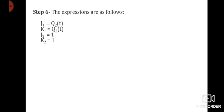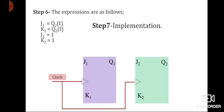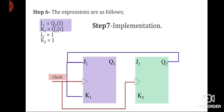Now moving toward implementation. We need two flip-flops since it is a two-bit counter. Since it is synchronous, each flip-flop is connected to a common clock. J1 and K1 are connected to Q2, and J2 and K2 are connected to logic 1. Q1 represents the MSB and Q2 represents the LSB. That is how we complete the design of a 2-bit synchronous counter following these six steps.